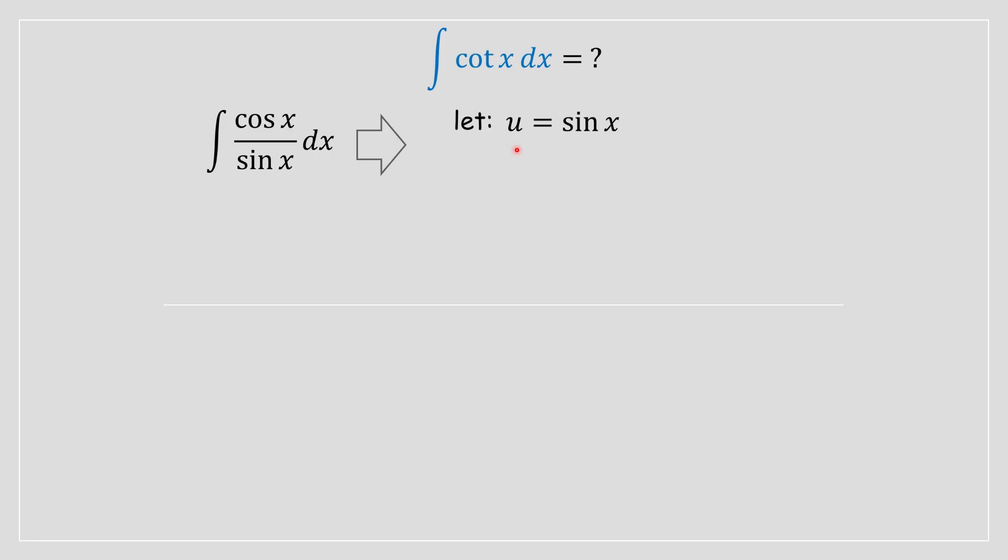On the left hand side you're going to be left with du, and on the right hand side you're going to be left with cos(x) dx, which is basically the derivative of sin(x). So we're going to rewrite in terms of dx: dx = du / cos(x).